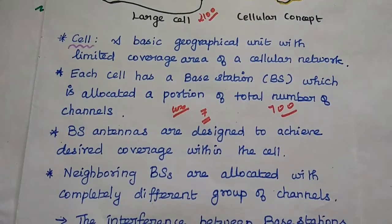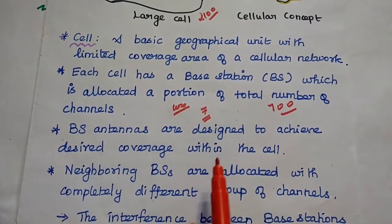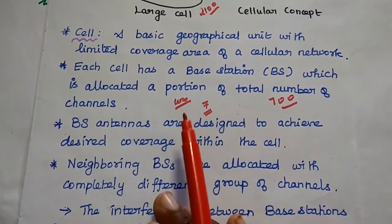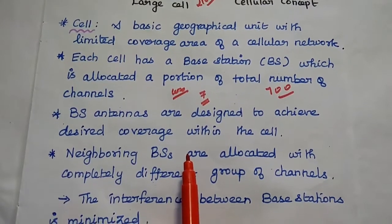The same 7 cells can be replicated with the same frequency range. The base station antennas are designed to achieve desired coverage within the cell. It can cover up to 100 subscribers within the limit.